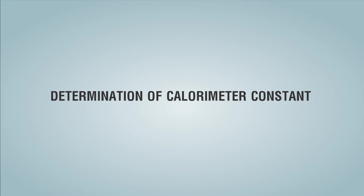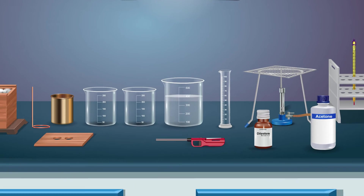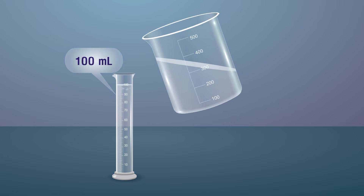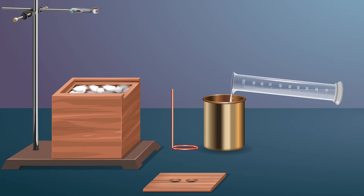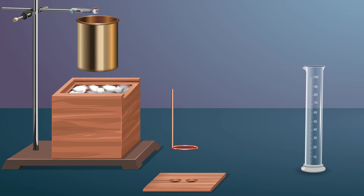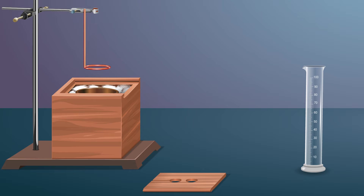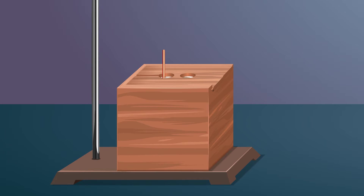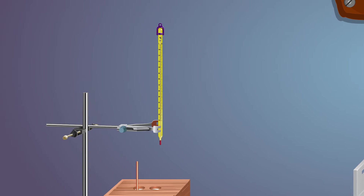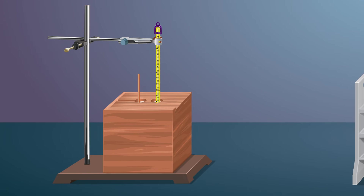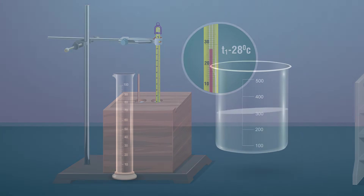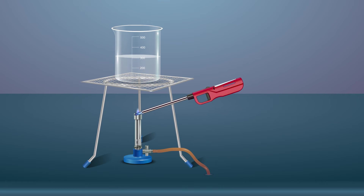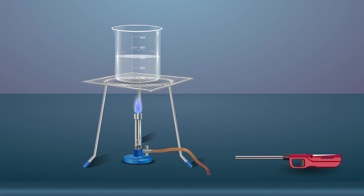Procedure: Determination of calorimeter constant. Put 100 milliliters of distilled water in a copper vessel of a calorimeter with a thermometer and stirrer. Note the temperature T1 degree Celsius. Heat some water in a beaker to a temperature of 20 to 30 degree Celsius above room temperature.